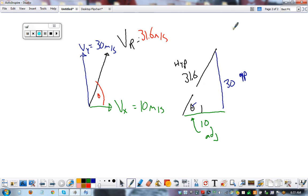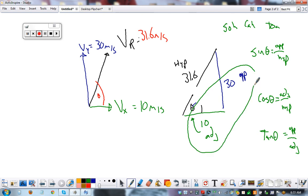And we'll use the following trig functions. Sohcahtoa. Sine theta equals opposite over hypotenuse. Cosine theta equals adjacent over hypotenuse. Tangent theta equals opposite over adjacent. We can pick any one because we know all three sides.